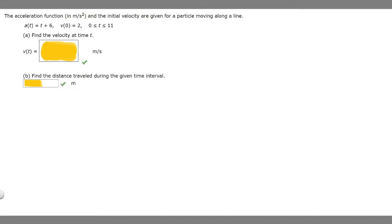In this problem we're told that the acceleration function in meters per second squared and the initial velocity are given for a particle moving along a line. So a(t) is equal to t plus 6, v sub 0 or v(0) is equal to 2, where our time is from 0 to 11 seconds.